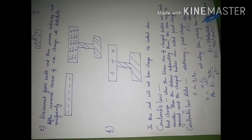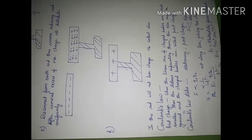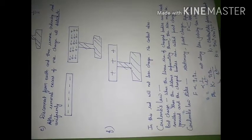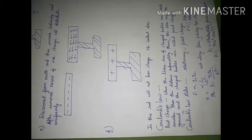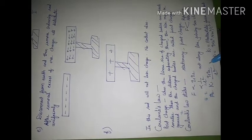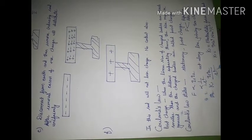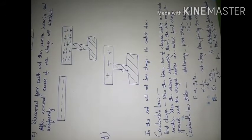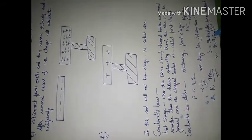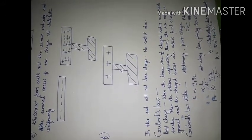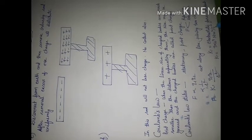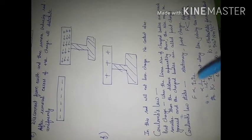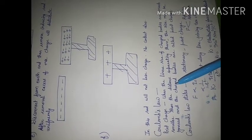The force will act along the line joining the two charges. When we remove the proportionality sign, a constant of proportionality k will be there. So F = k·q₁·q₂ / r², where k is the electrostatic force constant and its value is 9 × 10⁹ N·m²/C². You have to solve a few numericals based on Coulomb's law.